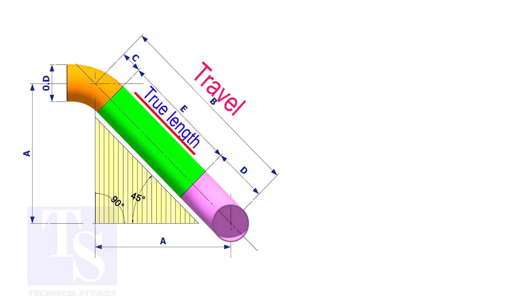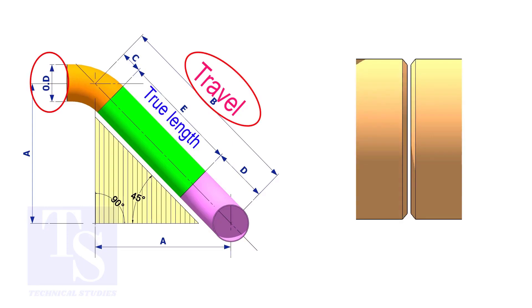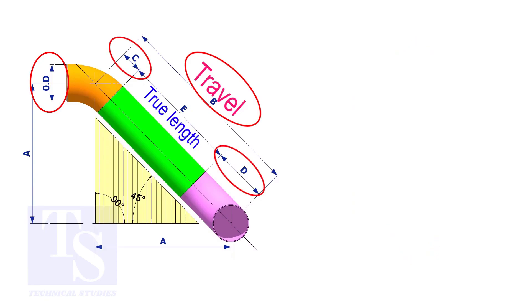To calculate the true length or the cut length, we need to know the travel length, the diameter of the pipe, the joint gap, and the elbow center. The elbow center is sometimes called takeoff length.